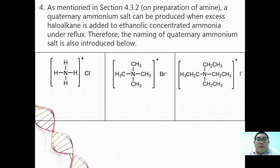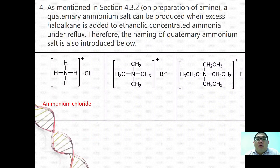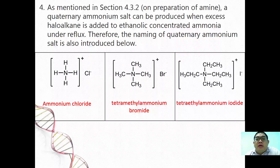As mentioned earlier, a quaternary ammonium salt can be produced when excess haloalkane is added to ethanolic concentrated ammonia under reflux. For naming: NH₄Cl is ammonium chloride. If all four hydrogens are substituted by alkyl groups, the name depends on the alkyl — four methyl groups gives tetramethylammonium bromide, four ethyl groups gives tetraethylammonium iodide. This is how quaternary ammonium salts are named.